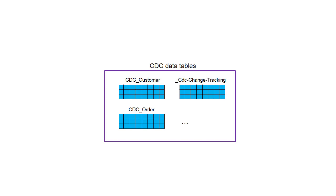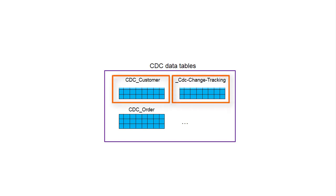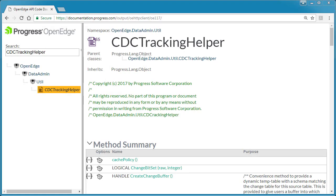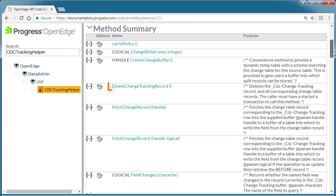There are two ways you can purge CDC data in OpenEdge ABL. The first way is to use an ABL helper class. The ABL helper class has a number of important advantages. For example, when you iterate through the CDC Change Tracking table, it will automatically purge the record in this table and the related records in the associated change table, using the foreign key relationship between the CDC Change Tracking table and the specific change table. The ABL helper class is called CDC Tracking Helper, and one of its methods is delete change tracking record, which is used to purge CDC data.